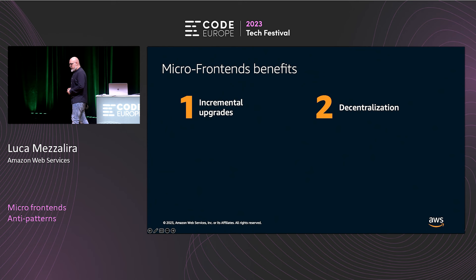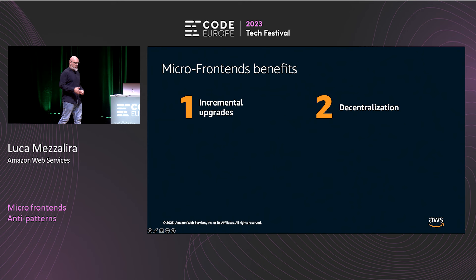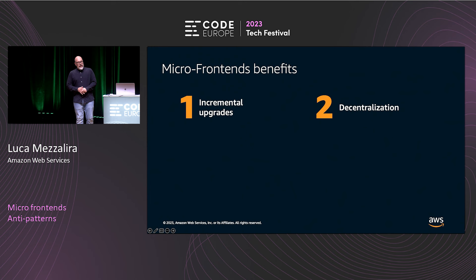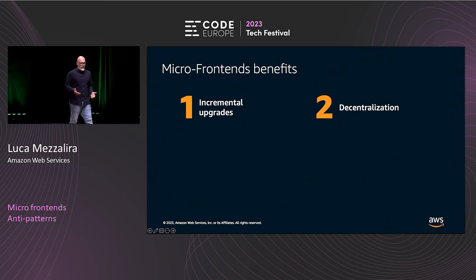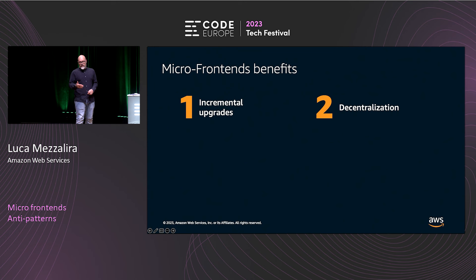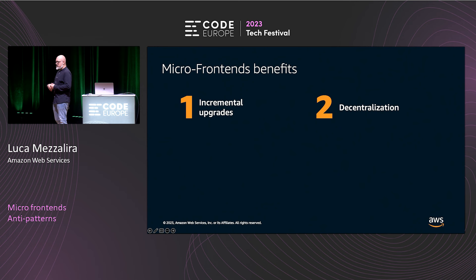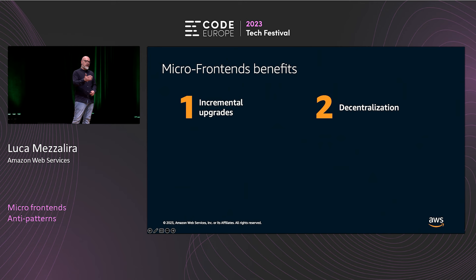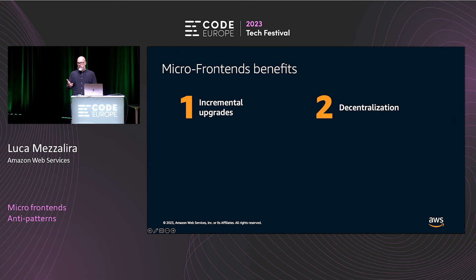The second benefit is decentralization. When working on large frontend systems, whatever framework or tools you were using, after a few years you start to slow down development — not because you don't understand how to code, probably you understand even better. But in order to have a cohesive and coherent codebase, you need to slow down because you can't explain all the decisions to new joiners. People are coming and leaving your team, and the concept of decentralization is quite key in the distributed system world — frontend, backend, it doesn't matter.